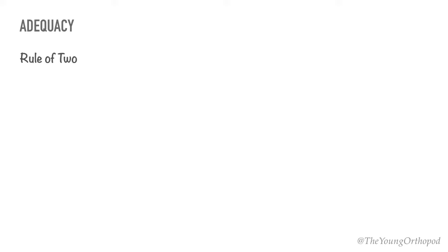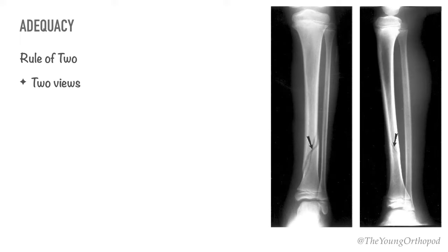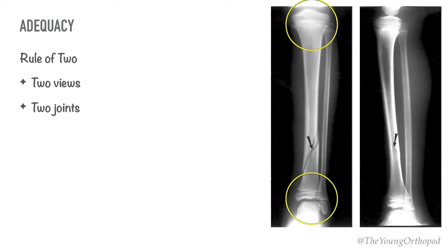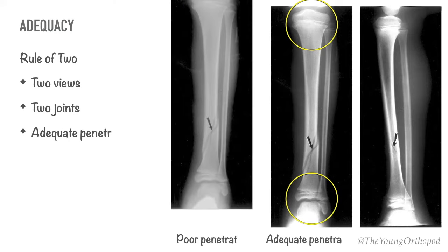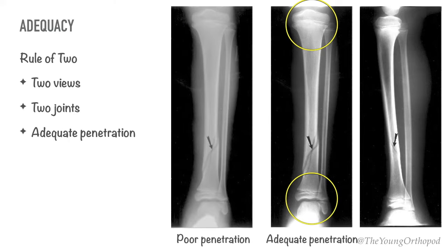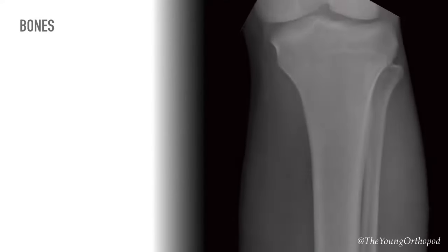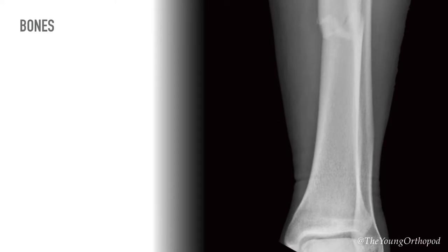To decide whether a radiograph is of adequate quality, always follow the rule of two. There should be at least two views — usually the AP and lateral views are adequate, but in some specific cases additional projections may be required. The joint above and below must be included, and all radiographs should have adequate penetration, meaning bones and soft tissues should be easily and clearly differentiated. Examine the entire length of the bone for fracture lines or distortions.